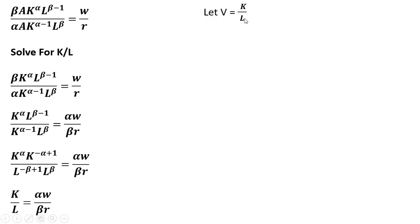We're going to let V equal K divided by L, and we're going to let Z equal the wage divided by the price of capital. Therefore, V equals alpha divided by beta times W divided by R. But W divided by R is just Z, so we got this expression now for V.